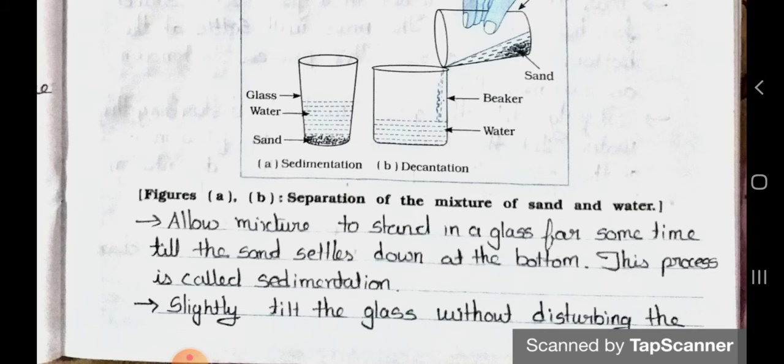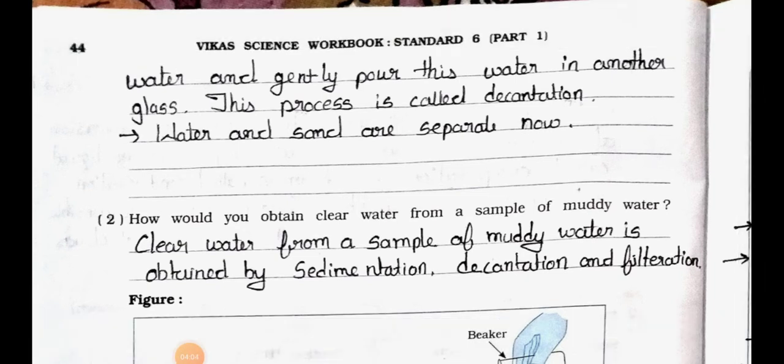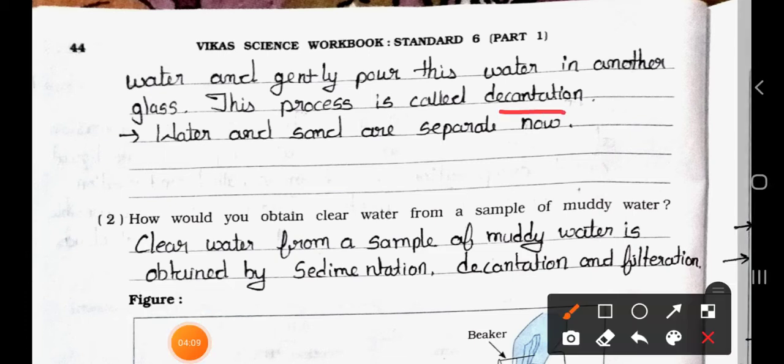And slightly tilt the glass without disturbing the water and gently pour this water in another glass. This process is called decantation. Water and sand are separate now.